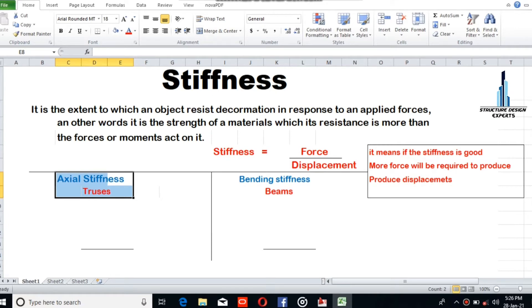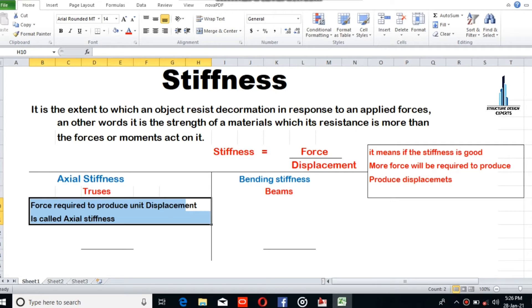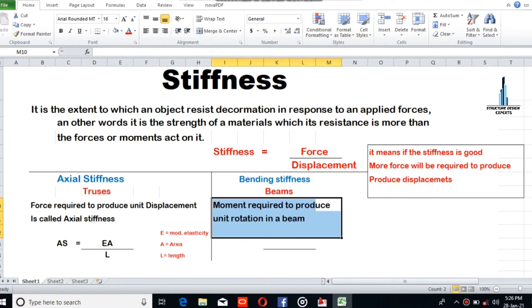We calculate two types of stiffness: one is axial stiffness and the second is bending stiffness. Bending stiffness is for beams and axial stiffness is for bar trusses. For trusses, the force required to produce unit displacement is called axial stiffness, so AS = EA/L, where E is the modulus of elasticity, A is area, and L is length.